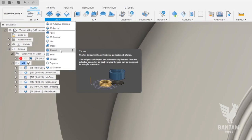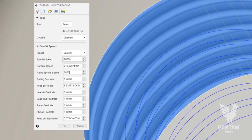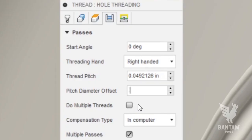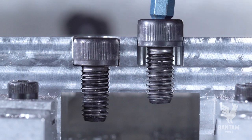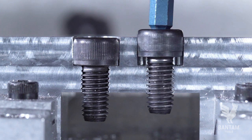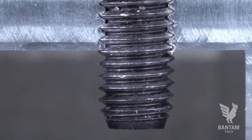Finally, we'll add a thread mill toolpath, select our tool, apply our speeds and feeds and enter those two important numbers: thread pitch and the pitch diameter offset from the calculator. If at first the thread is too tight, you can increase that offset number by a couple thousandths of an inch at a time until your threads fit perfectly.